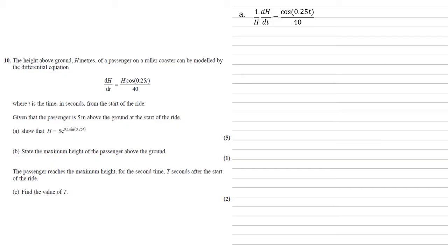If we now integrate both sides with respect to t, on the left hand side the dt's cancel each other out, so we end up with the integral of 1 over h with respect to h, and on the right hand side we're integrating with respect to t.